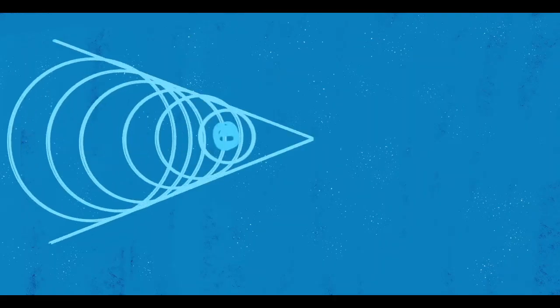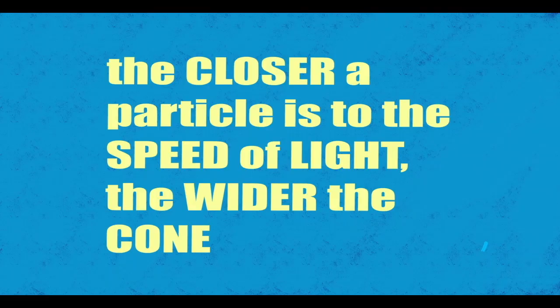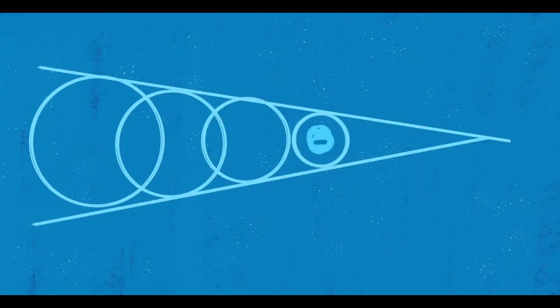The closer to light's apparent speed an electron is, the wider the cone. The farther from light's apparent speed, the narrower the cone.